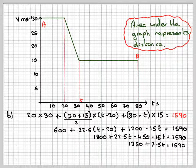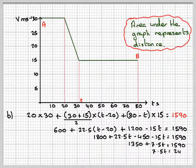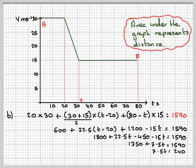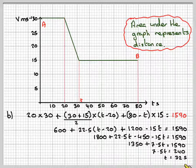Subtracting 1350 from both sides, we get 7.5T is equal to 240. And therefore, T will be 32 seconds.